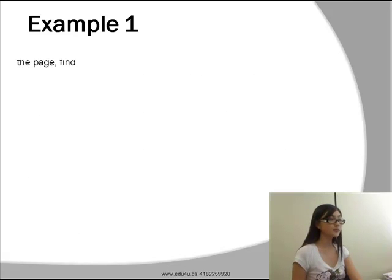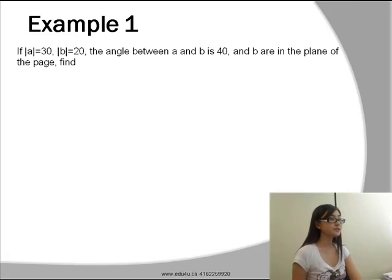Now let's take a look at example 1 from the learning resources. If the magnitude of A is equal to 30 and the magnitude of B is equal to 20, the angle between A and B is 40, and A and B are in the plane of the page. Find A cross B and B cross A.